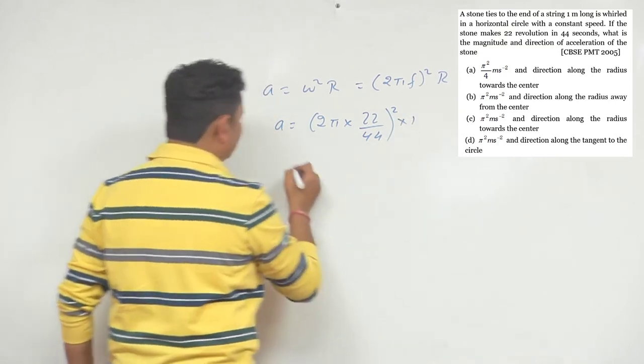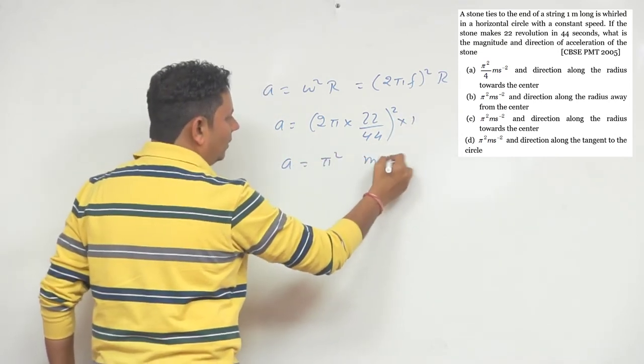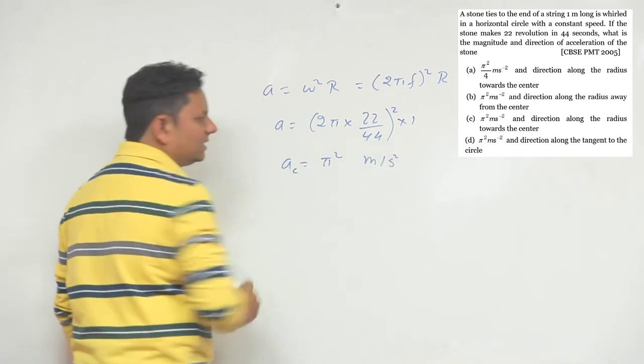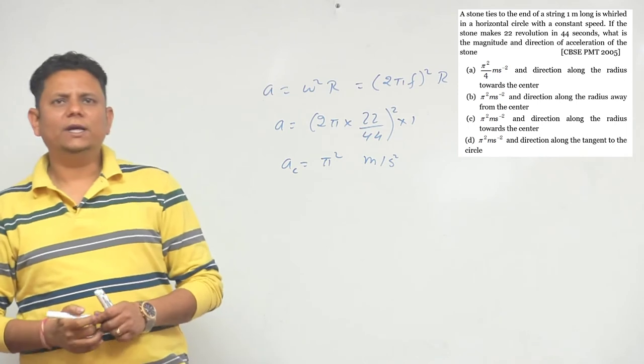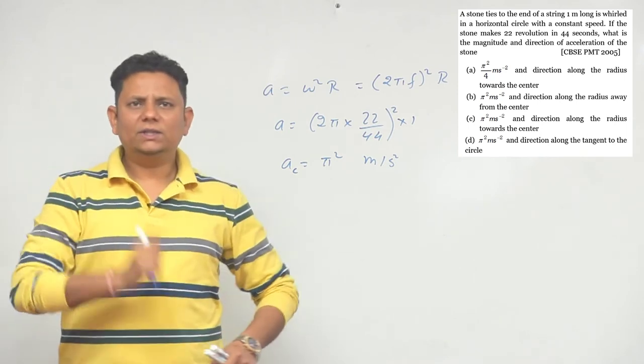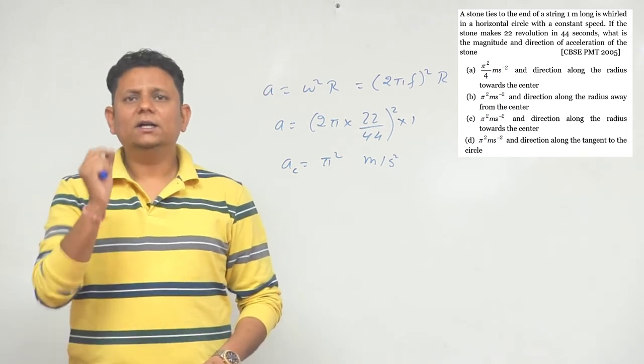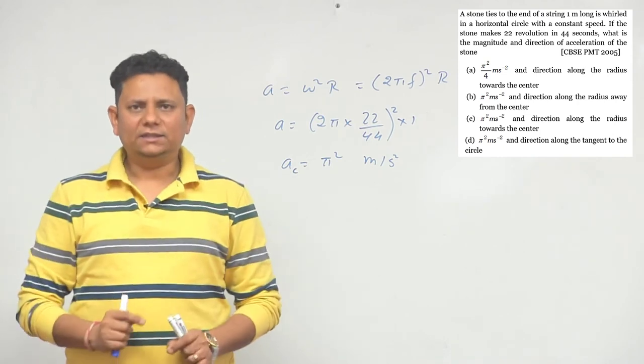So acceleration comes out to be π² meters per second squared. This is centripetal acceleration, and the direction of centripetal acceleration is always towards the center or along the radius, which means option C would be the correct answer.